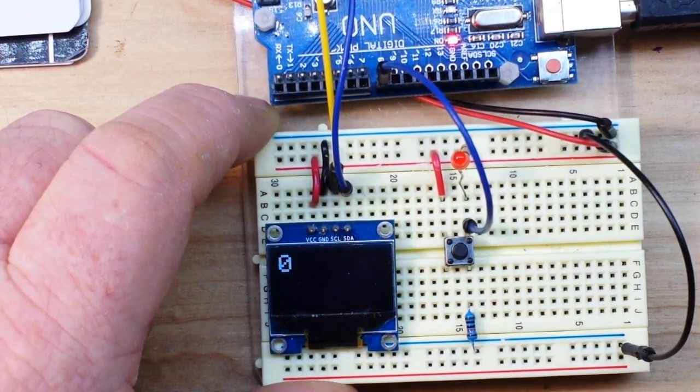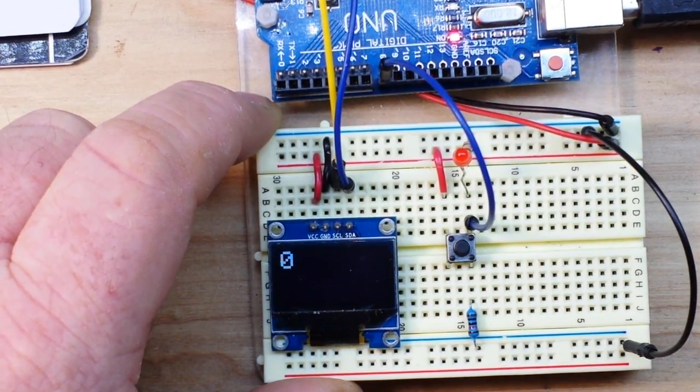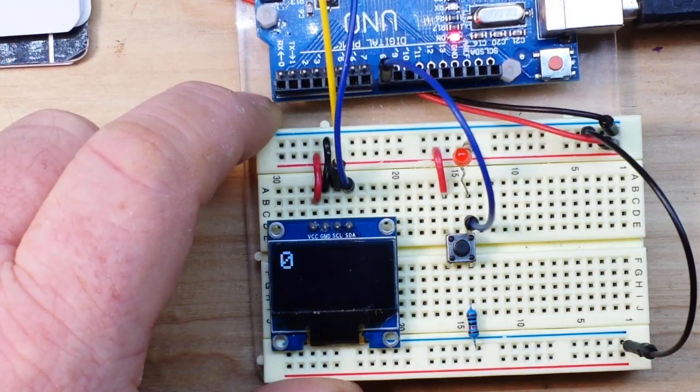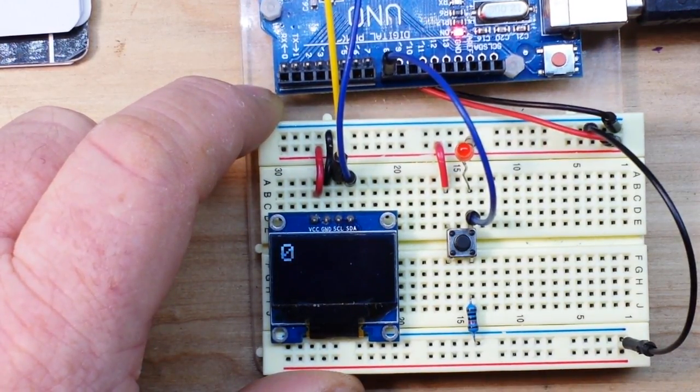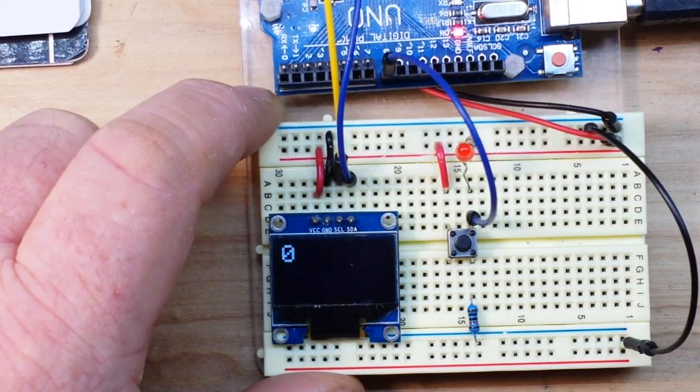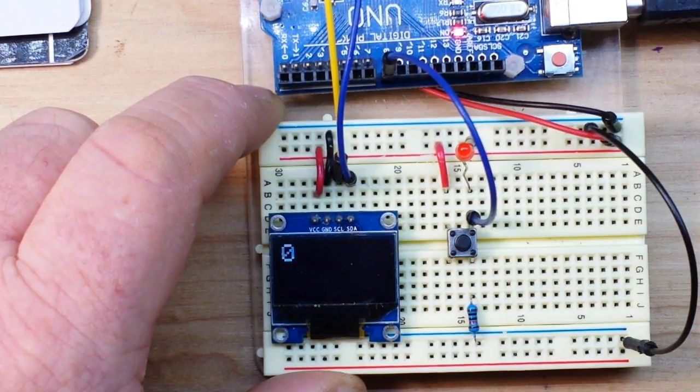So if we wanted to reverse that and use the pull-up resistor, all we have to do is change our code to say input pull-up, and we can take the resistor out of there and use the internal resistor inside the Arduino, which also works out pretty nice.